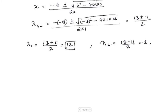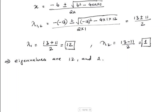So these are our two lambda values, or the two eigenvalues: 12 and 1. Now we have to find out the eigenvectors for each eigenvalue. Let's start working for the first eigenvector corresponding to lambda equals 12. To find the eigenvector, we have to solve the equation (A minus lambda I) times vector x equals 0, where our lambda is 12.